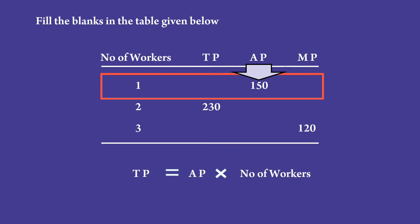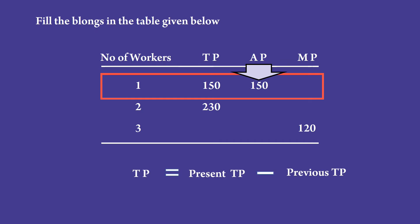Average product times number of workers is total product. Average product is 150 and number of workers is 1, so 150 multiplied by 1 equals 150. The total product is 150. To calculate marginal product, the formula is present total product minus previous total product. Present total product is 150 and previous total product is 0, so 150 minus 0 is 150. Marginal product is 150.